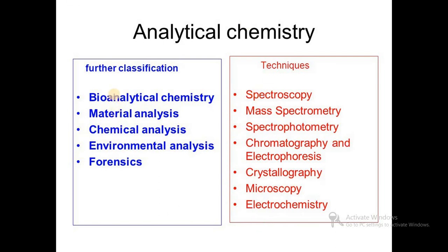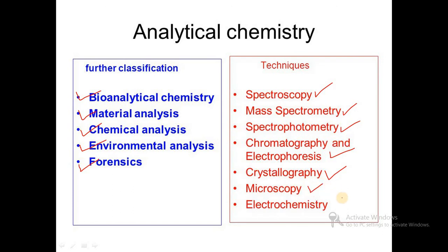Overall, analytical chemistry has several sub-classifications: bioanalytical chemistry, material analysis, chemical analysis, environmental analysis, and forensics. The techniques used include spectroscopy, which is a major technique to determine the composition of any material; mass spectroscopy to determine weight; spectrophotometry, which is a light absorbance technique; chromatography; electrophoresis; crystallographic techniques; microscopy; and electrochemistry.